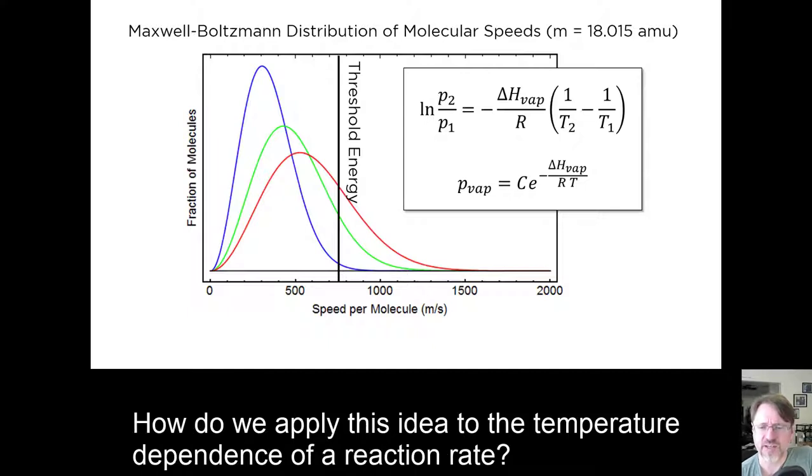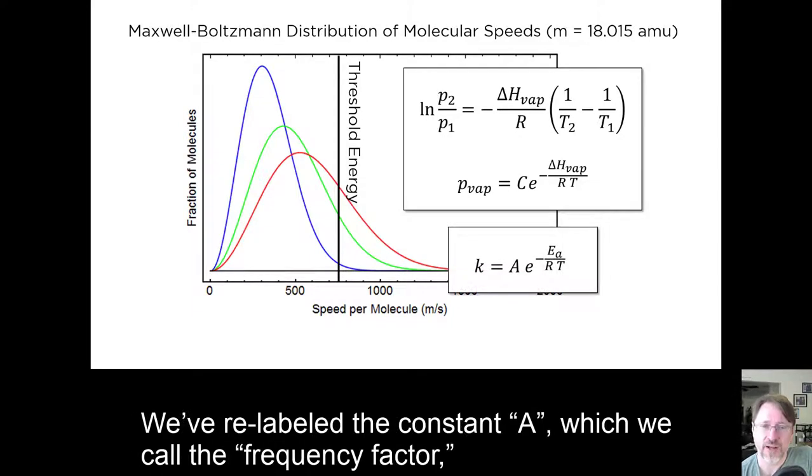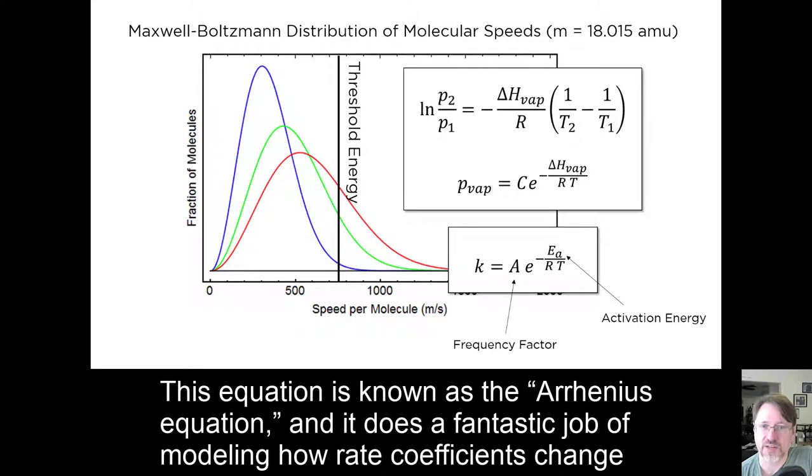How do we apply this idea to the temperature dependence of a reaction rate? Well, we use exactly the same expression for the rate coefficient. We've relabeled the constant A, which we will call the frequency factor. And instead of the enthalpy change of vaporization, we use the activation energy. This equation is known as the Arrhenius equation, and it does a fantastic job of modeling how rate coefficients change with temperature.